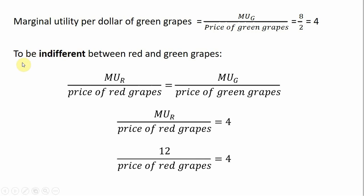This leads us into deriving the consumer's demand curve for red grapes. To be indifferent between red and green grapes, the marginal utilities per dollar have to be equal across these two goods. So the marginal utility for red grapes divided by the price of red grapes has to equal the marginal utility per dollar of green grapes — MU_G divided by the price of green grapes. We know the right-hand side is 4. So setting the marginal utility per dollar of red grapes equal to 4, we solve for what price of red grapes will leave the consumer indifferent.